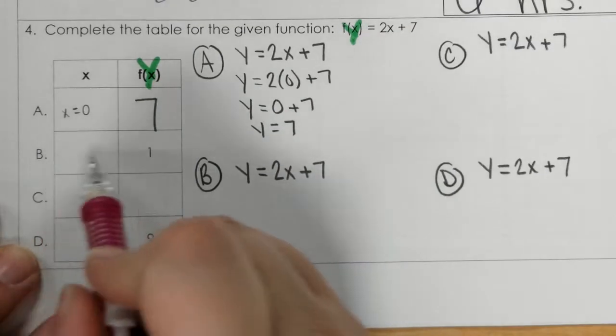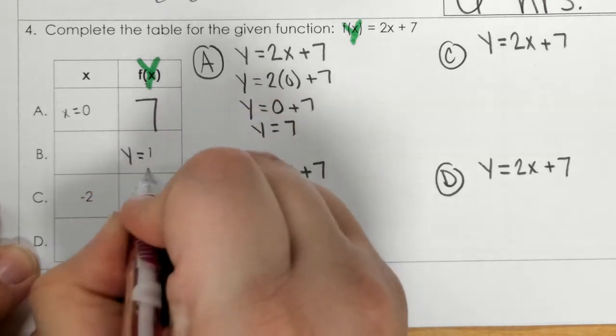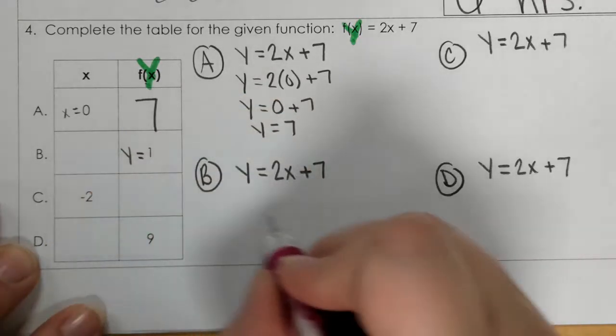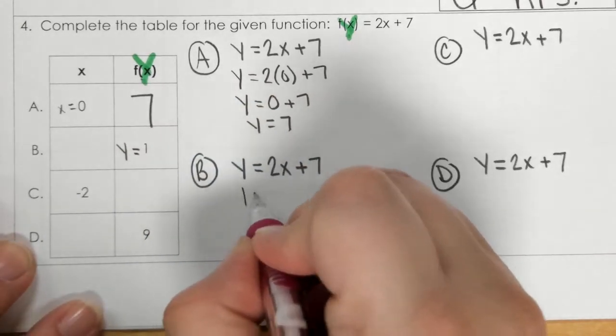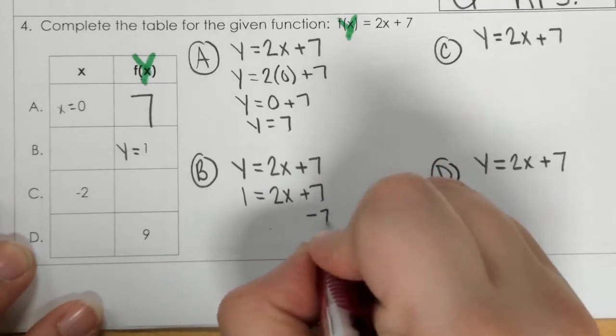Then, for B, this 1 is a y, because it's under the y column. Okay, so it's a y. And so, I plug it in for the y here. And now, I see that I have a two-step equation.